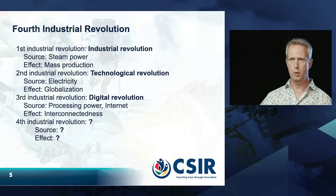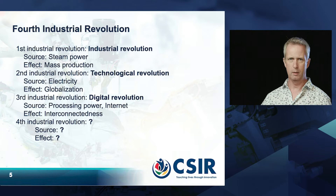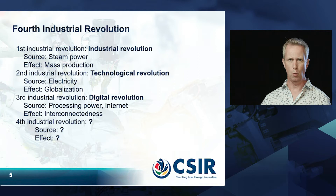The second industrial revolution, typically called the technical revolution, had electricity as its source, with globalization as its effect. The third industrial revolution, called the digital revolution, had processing power and the internet as its source, leading to global interconnectedness. Now the question is: if we're in this fourth industrial revolution, what exactly is the source and what is its effect?